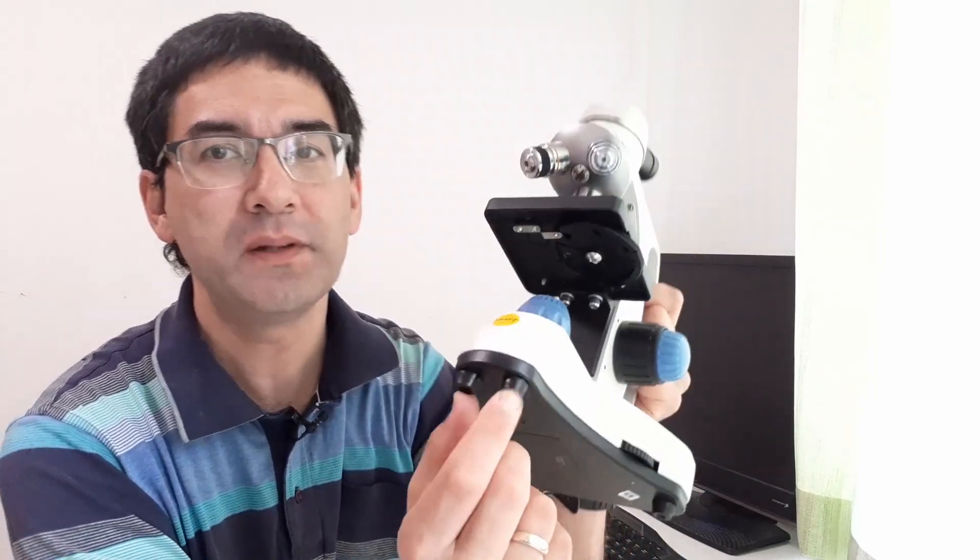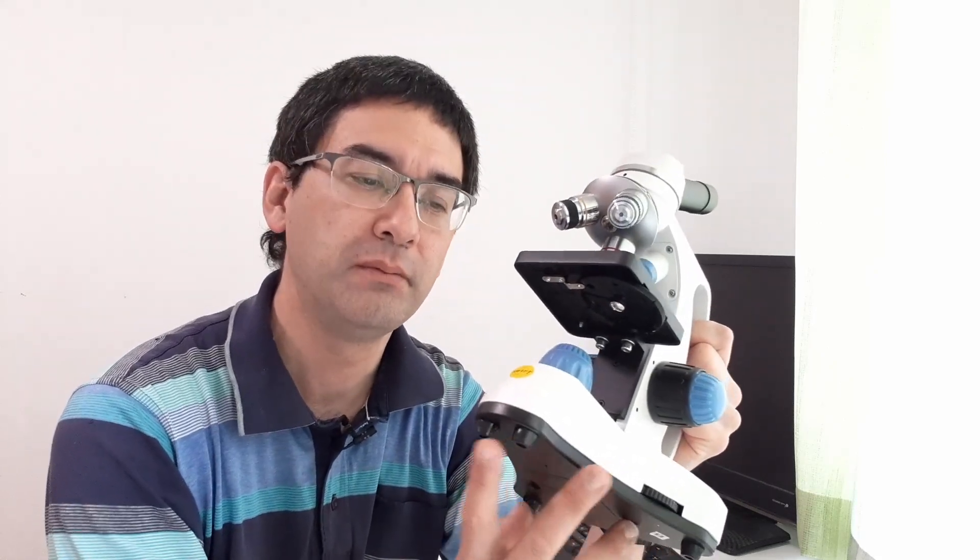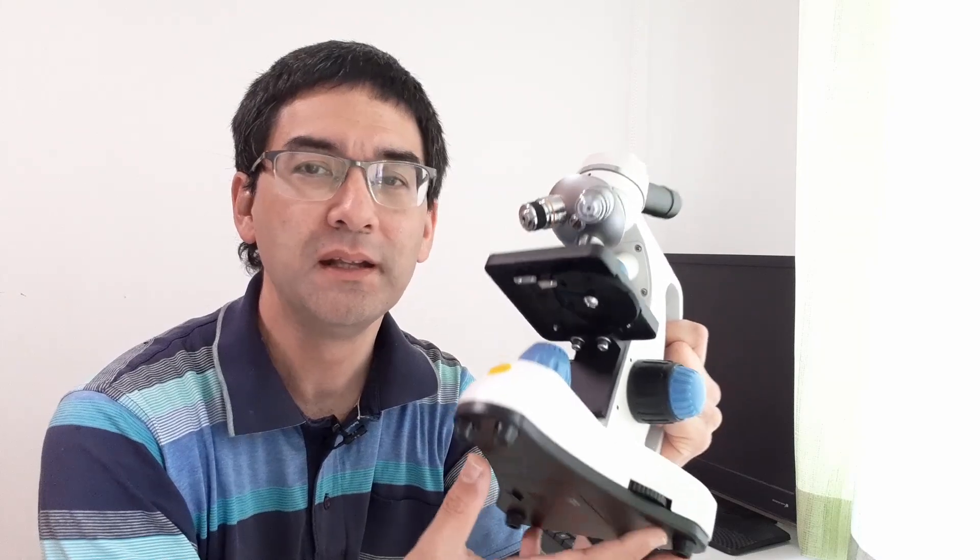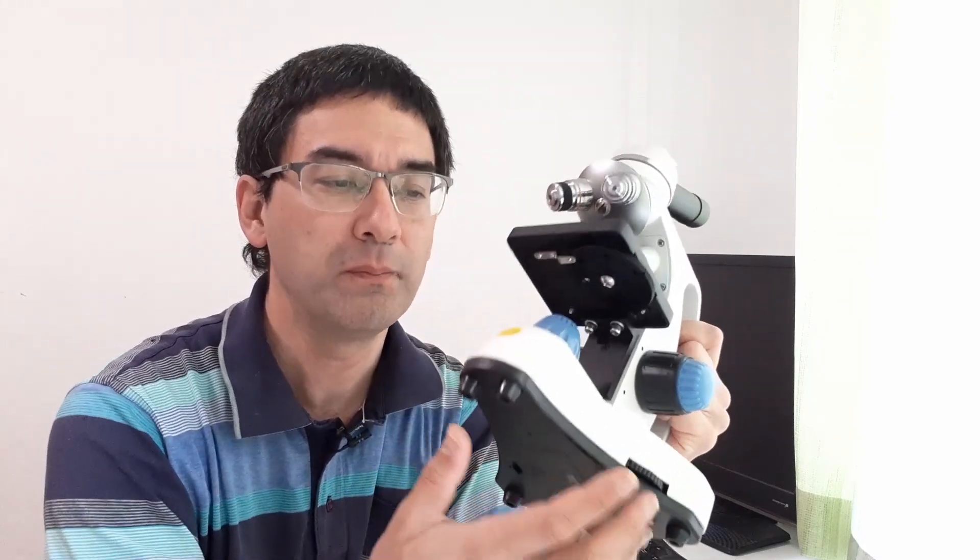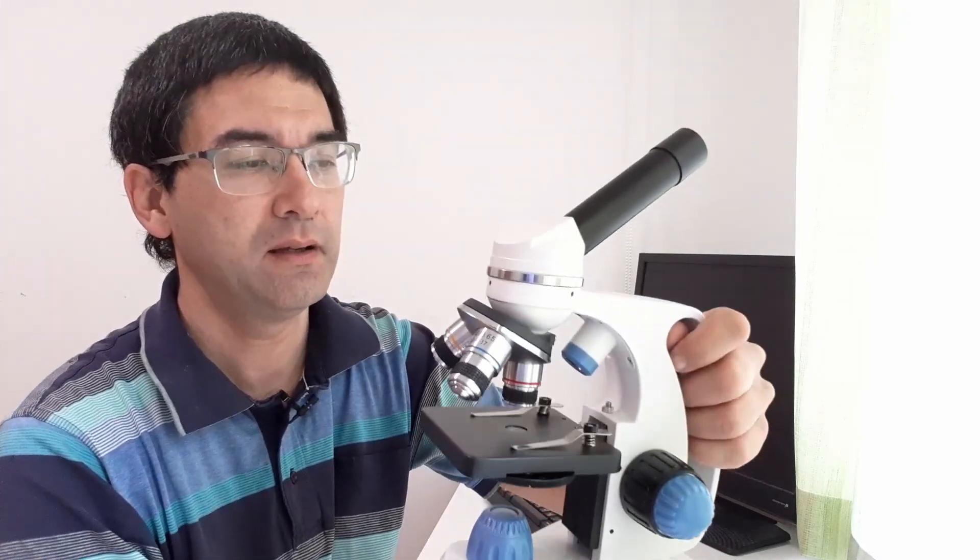Now the microscope itself has a triangular shape here. This is actually quite good because it gives it a little bit more stability than those microscopes that are square. So in that sense I kind of like the design.